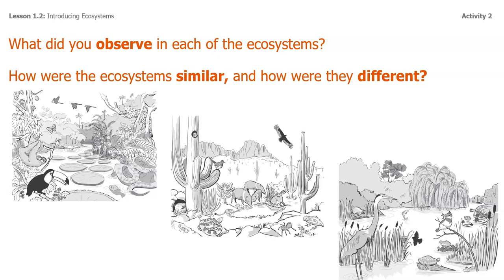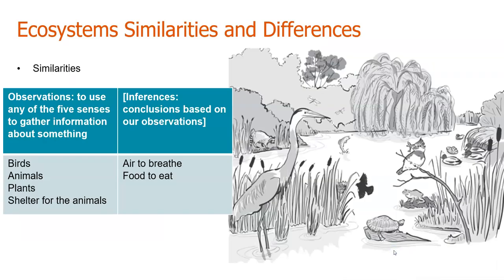Now that you've taken a look at those pages — if you haven't, you might want to pause the video now — what did you observe in each of the ecosystems? How are the ecosystems similar and how are they different? Let's start with some similarities. I noticed in all three of the pages in your packet that there are birds, animals of different kinds, plants of different kinds, and there was shelter for the animals. I also couldn't help but make some inferences. An inference is a conclusion based on our observations, and scientists try to keep observations and inferences apart, but sometimes it's really difficult. The inferences I've come up with: because there are birds and animals and plants in all three pictures, there must be air to breathe and there must be food to eat.